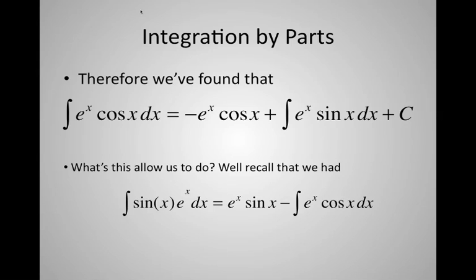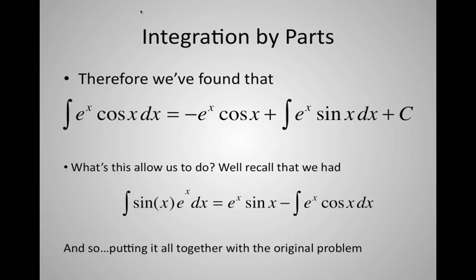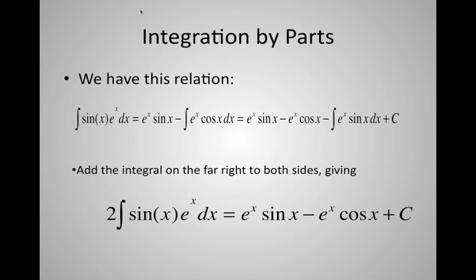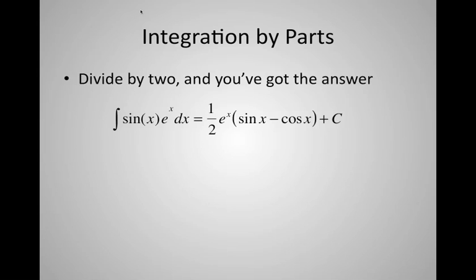Putting it all together: we had integral of sin(x)·eˣ = eˣ·sin(x) minus the integral of eˣ·cos(x). Substituting the second IBP result, we now have the original integral appearing on both sides. Adding that integral to both sides gives 2 times the integral of sin(x)·eˣ dx = eˣ·sin(x) minus eˣ·cos(x) plus C. Dividing by 2, the answer is: integral of sin(x)·eˣ = (1/2)·eˣ·(sin(x) minus cos(x)) plus the constant of integration.